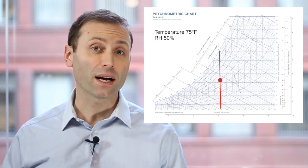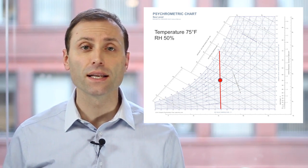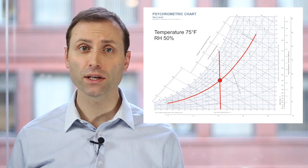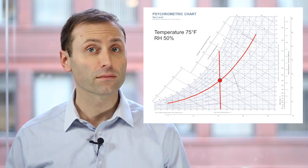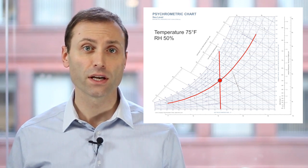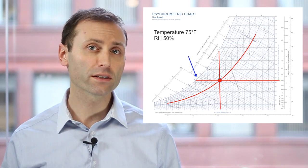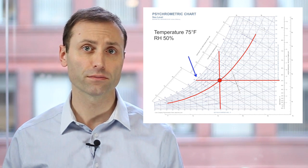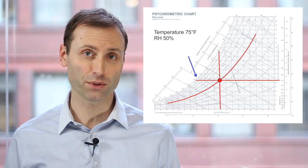Once you have one, I like to draw a thick vertical line through my temperature. Next, I draw a thick line through my relative humidity, which is represented by curved lines on the chart. I see where these two lines intersect and I draw a dot. Then I draw a horizontal line through the dot and see where it intersects with the left side of the chart, which is called the saturation curve. I read the number on the saturation curve to get my dew point temperature.